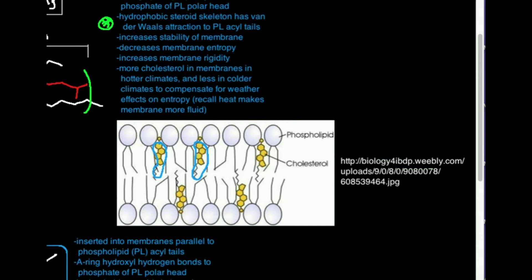See how they're parallel to the phospholipid tails? But you also see this little OH group right there. That's what that is. That's the OH group. And it's hydrogen bonding to these heads right here of the phospholipids because they're polar too.